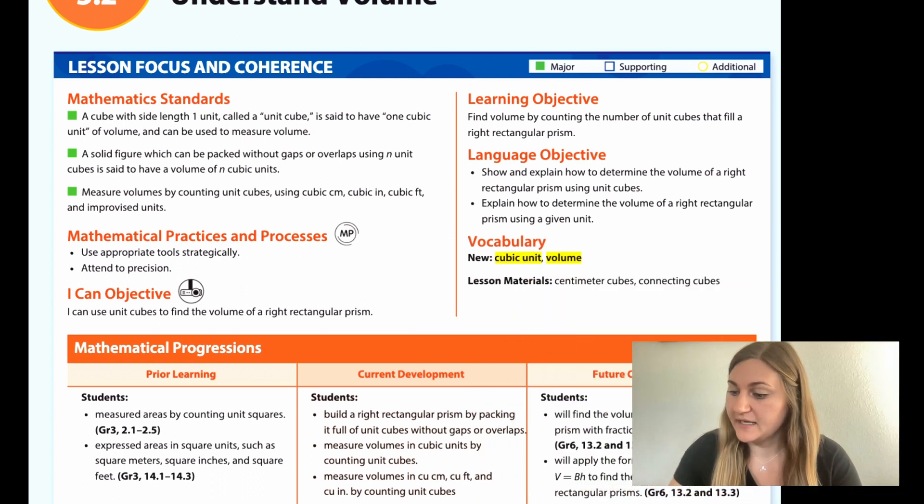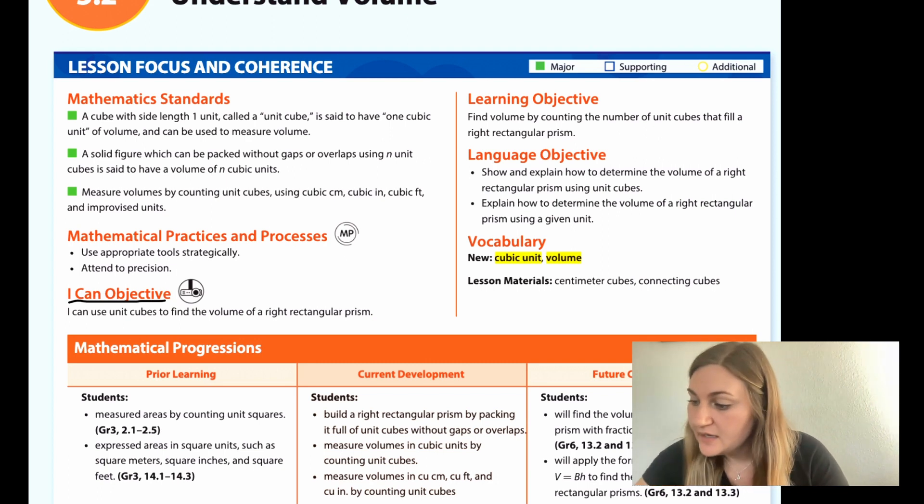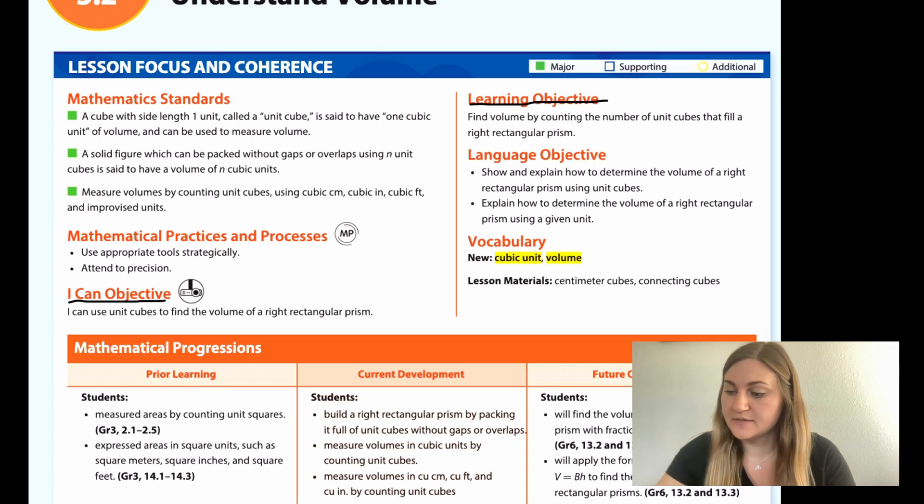I'm going to start off by going over the I CAN objective. This says I can use unit cubes to find the volume of a right rectangular prism. And the learning objective is to find volume by counting the number of unit cubes that fill a right rectangular prism.